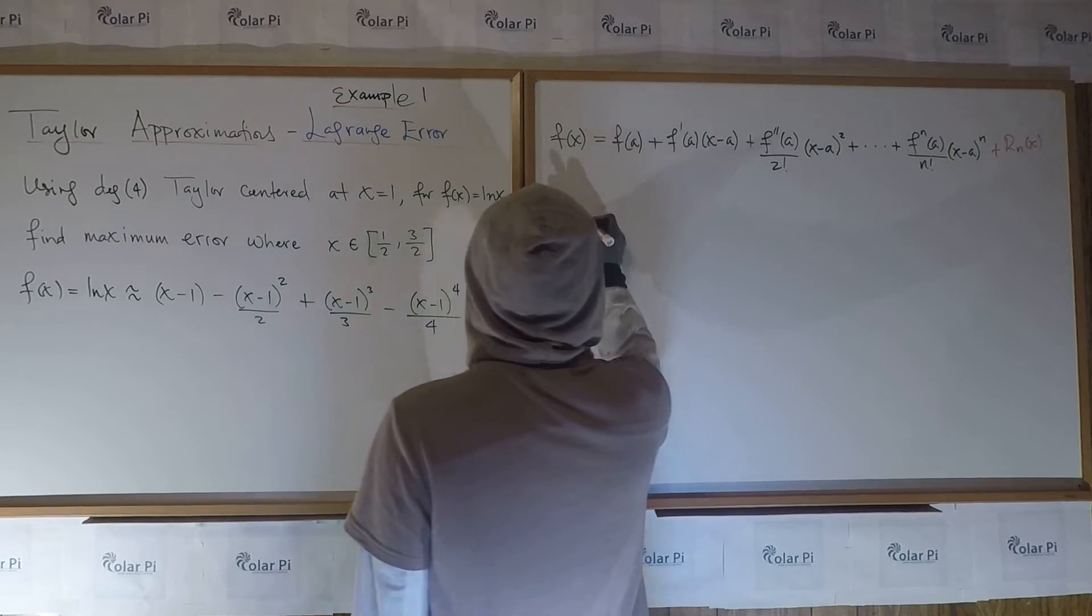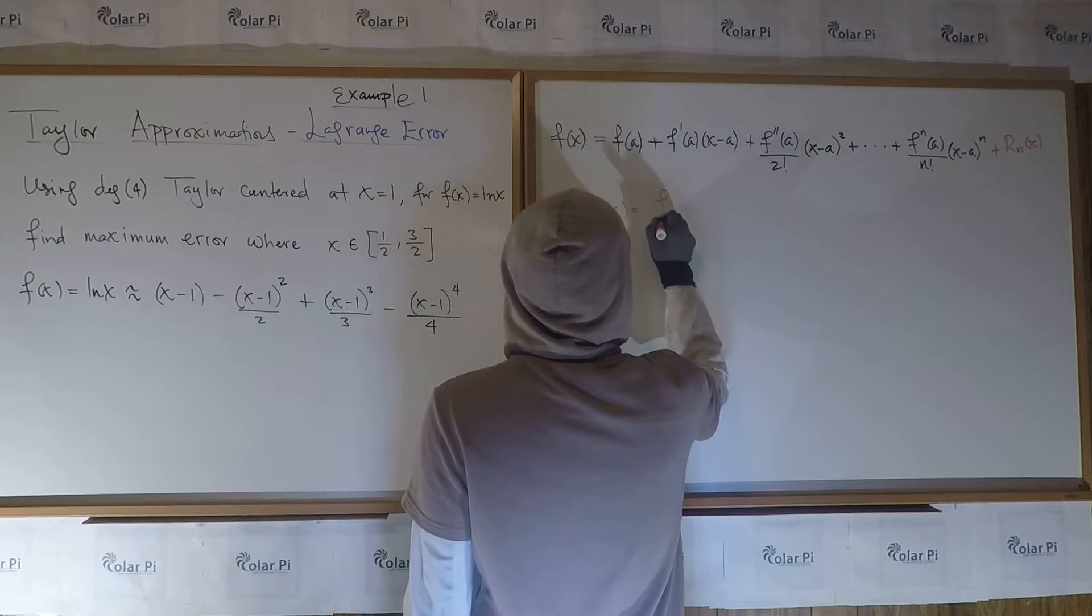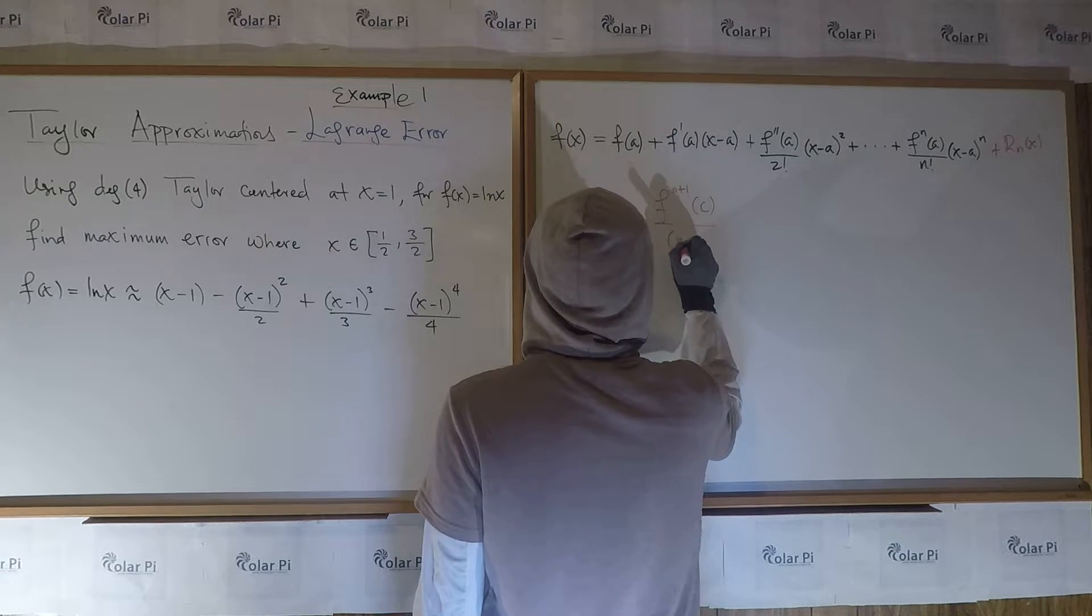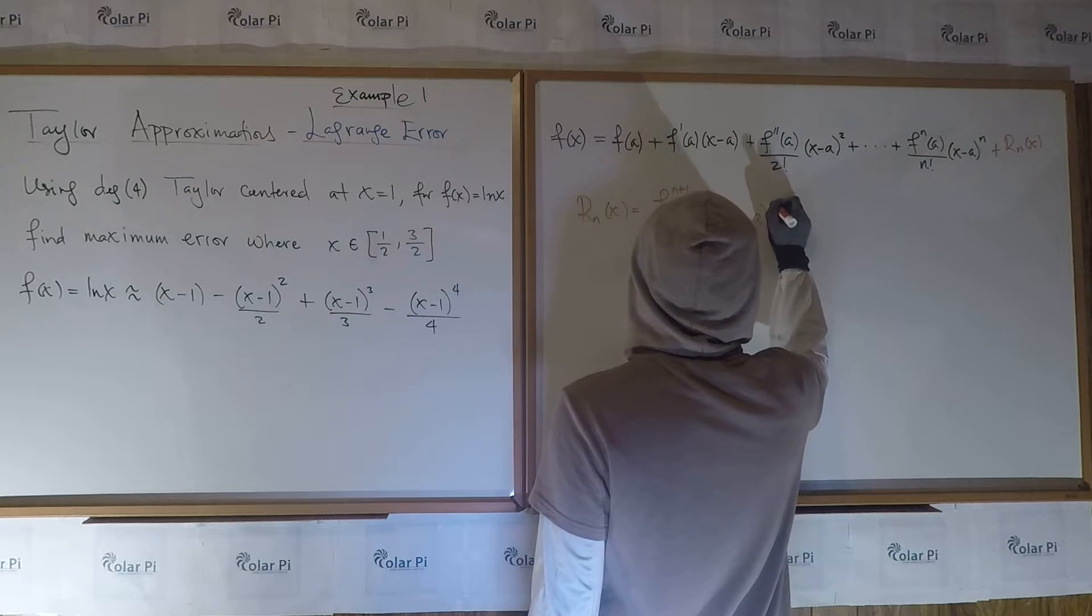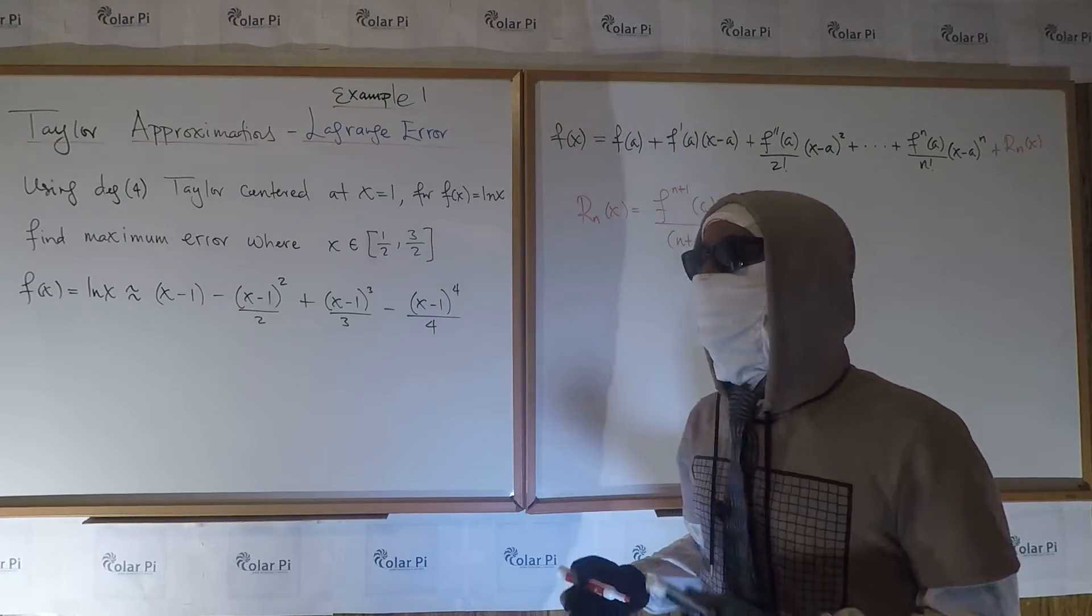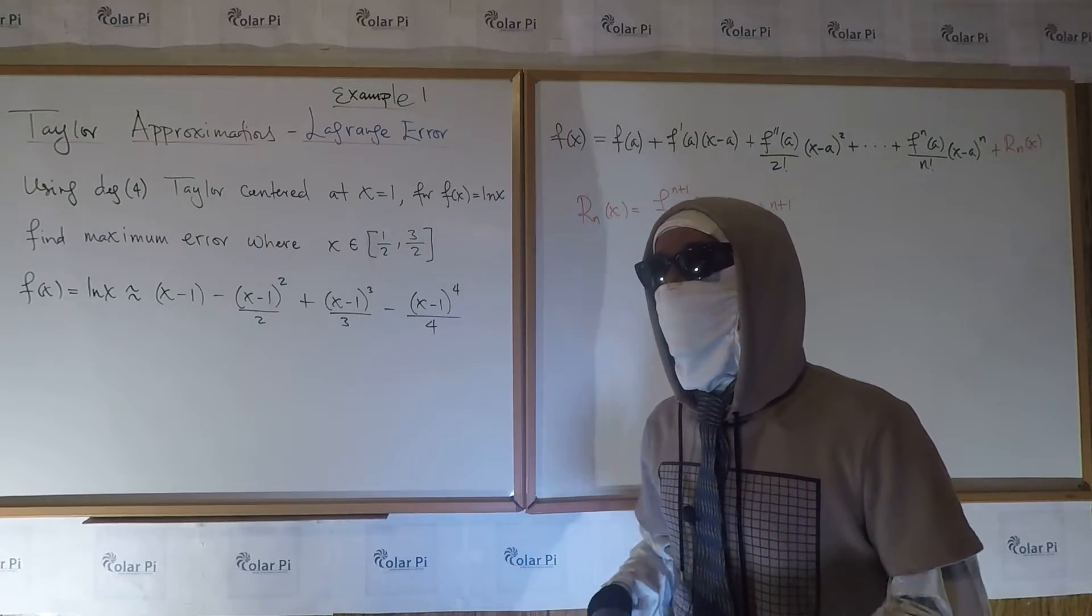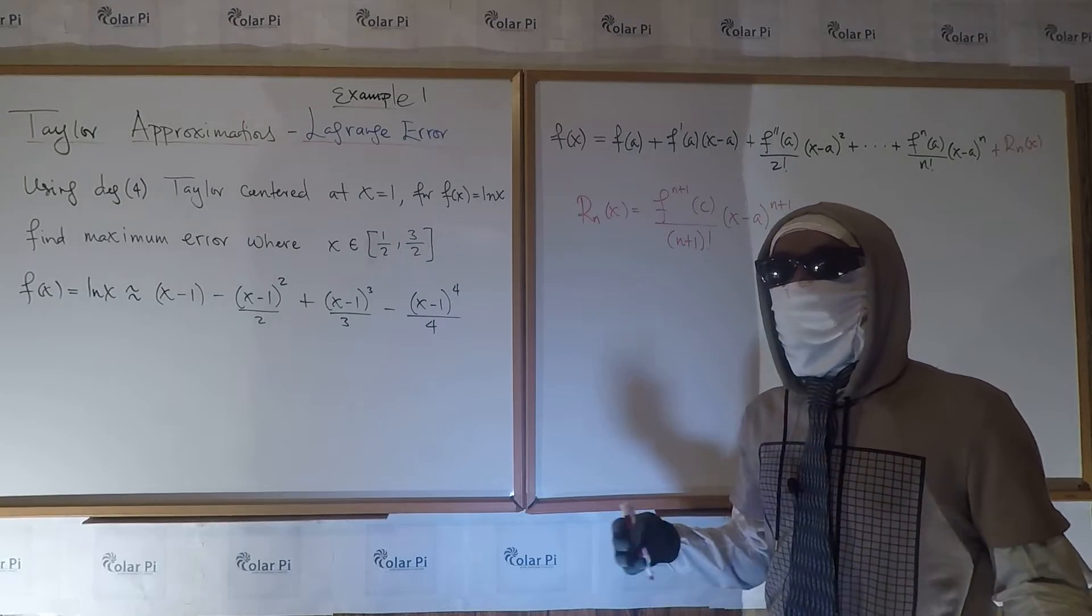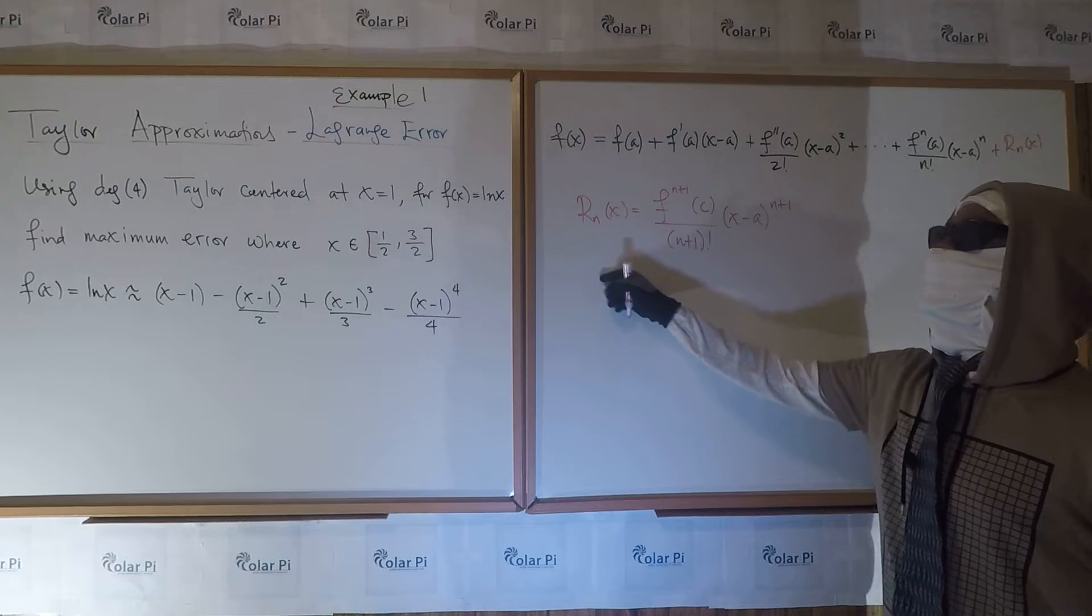So it turns out that rn of x is equal to fn plus one of c over n plus one factorial times x minus a to the n plus one. And this is example one. So I'll have a couple of additional examples, practical examples, but example zero in my video series is like a proof and the motivation. So if there's enough views for this video and the other examples, then I'll make an example zero explaining why this has got to be so.